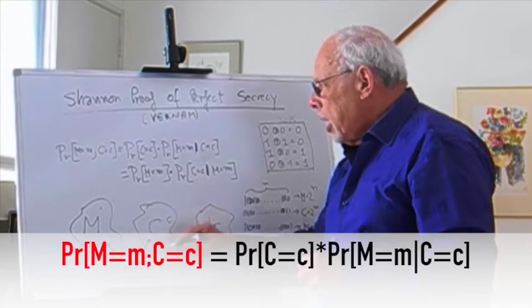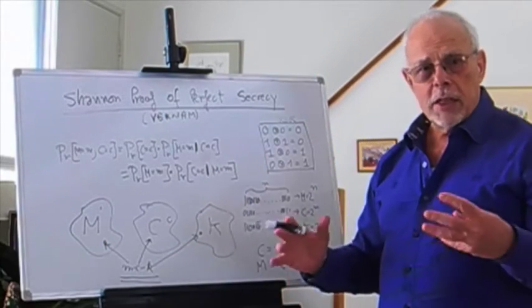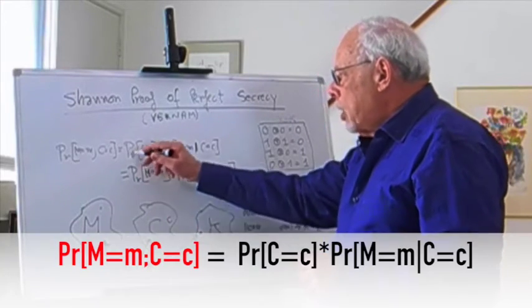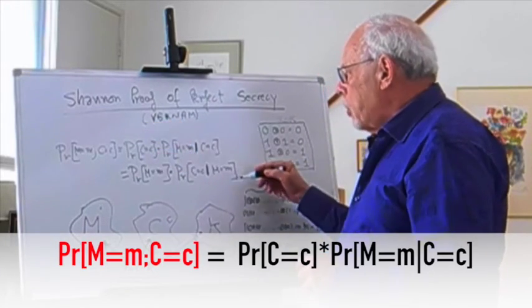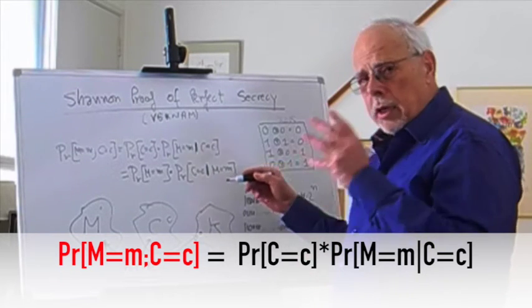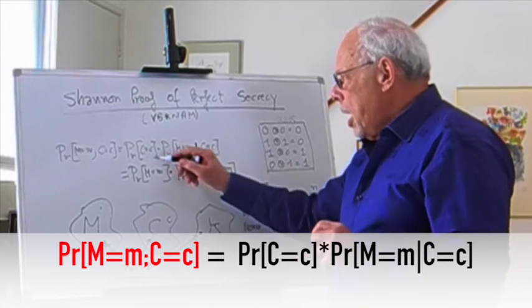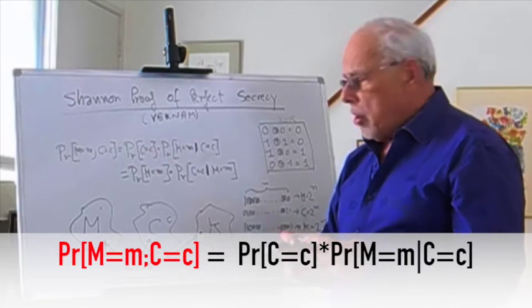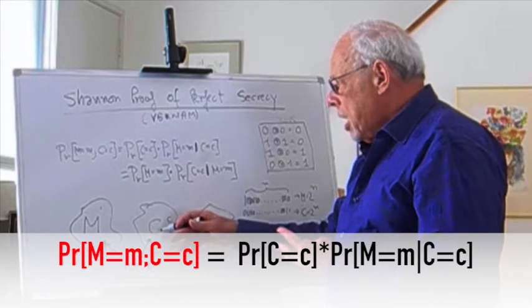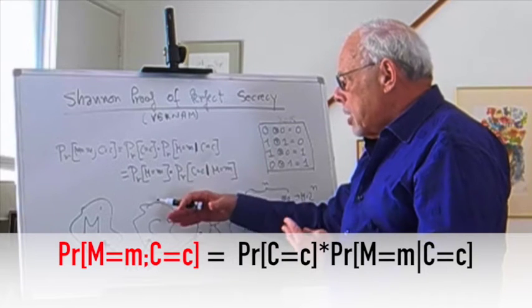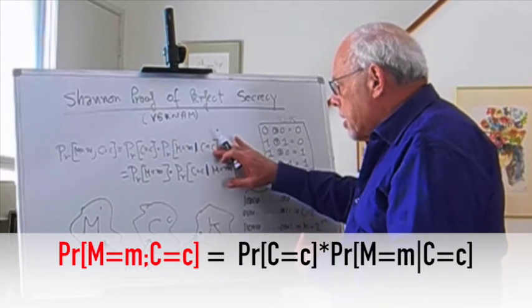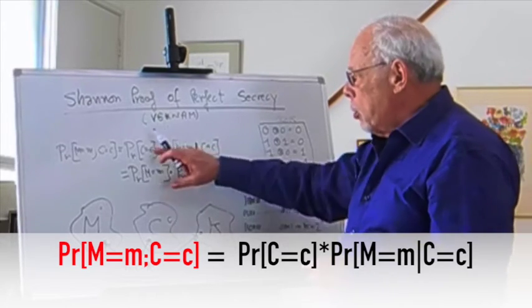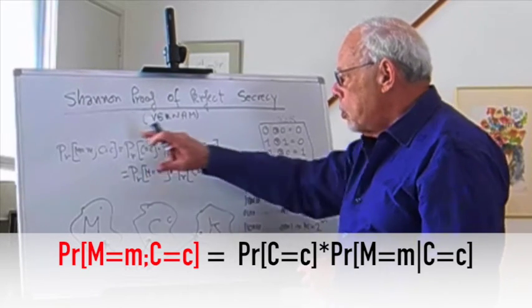You're saying: what's the chance that the ciphertext is c, and out of those cases, what is the chance that if it is c, then the message is m? You multiply these two, you get this.